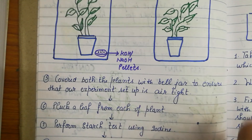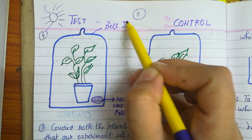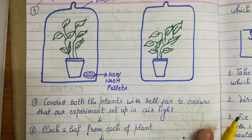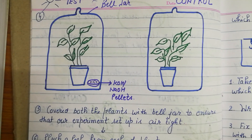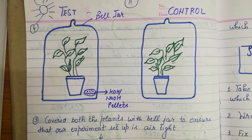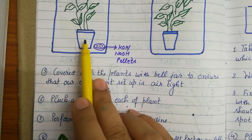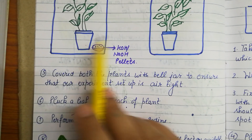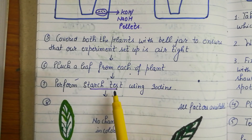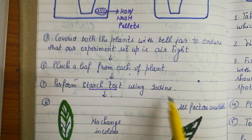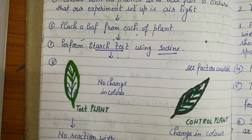Cover both the plants with a bell jar to ensure that our experiment setup is airtight. In the next step, pluck a leaf from each plant — from both the test and control plant — and perform the starch test. As you know, the starch test is performed using iodine solution.